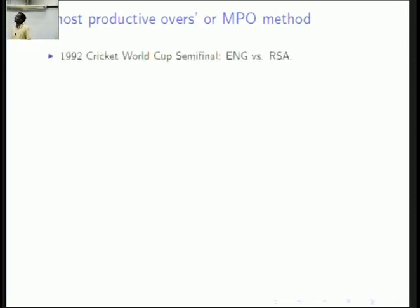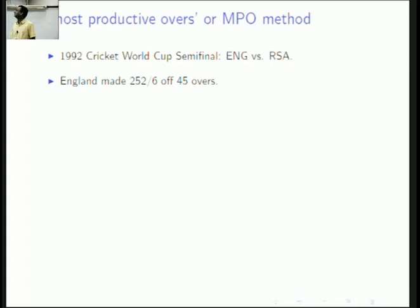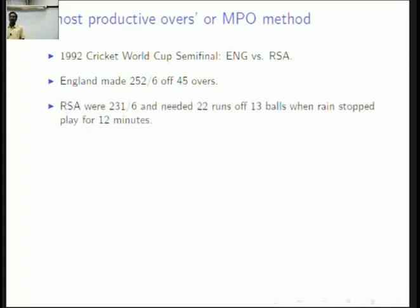It was the 1992 World Cup semi-final — England versus South Africa. England made 252 for 6 off 45 overs — the match had already been shortened due to rain at the beginning. South Africa was chasing and were 231 for 6, meaning 22 runs were needed, and they had 13 balls left when rain stopped play for 12 minutes.